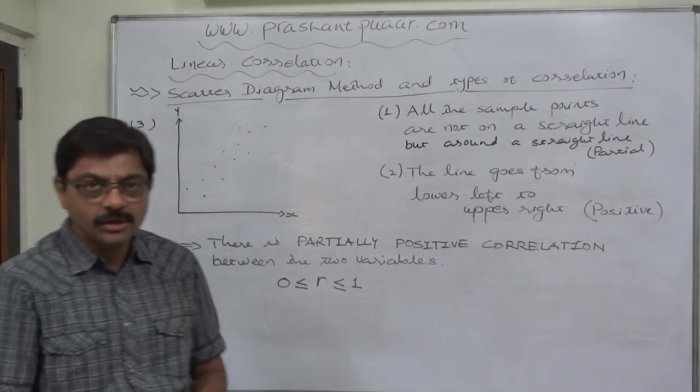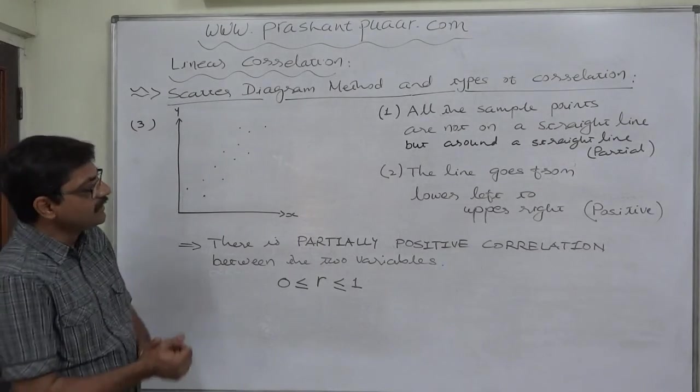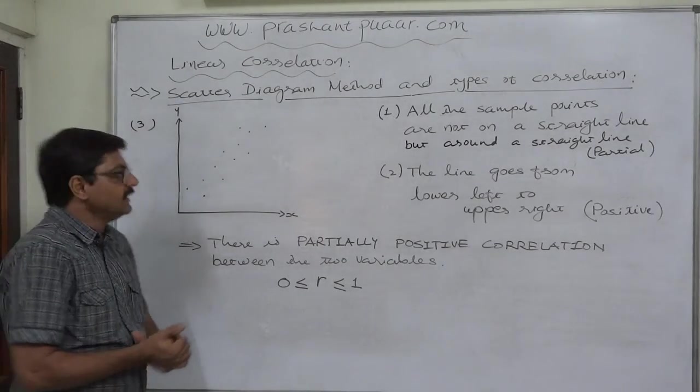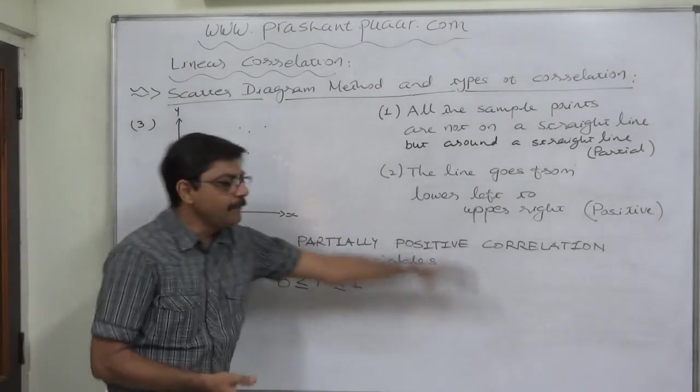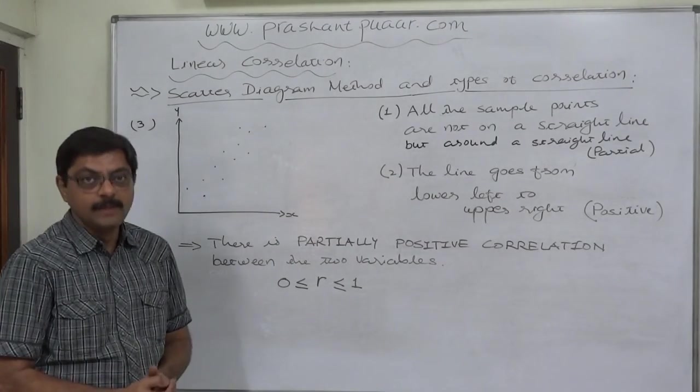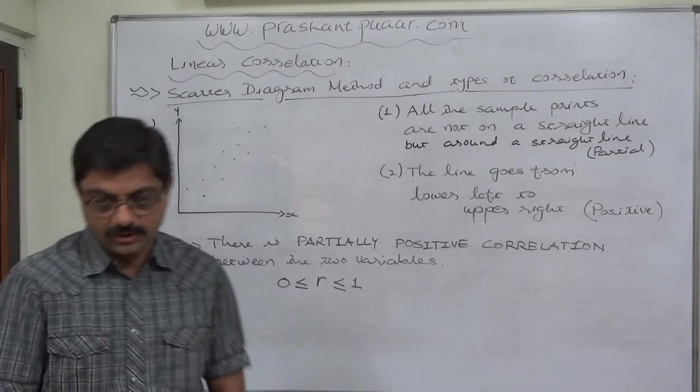So the third possibility on a scatter diagram is partially positive correlation. Thank you.